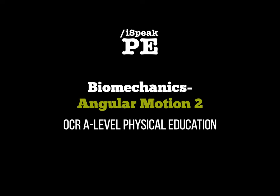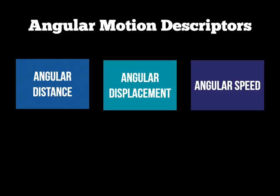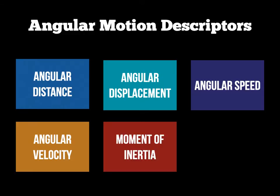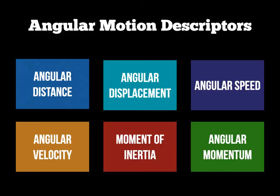Hello again, folks. This is another screencast on Biomechanics, and this time we are looking at the second aspect of angular motion, revolving around moment of inertia. If you remember from the last screencast, Angular Motion 1, we took a look at the different angular motion descriptors. The first four boxes on the screen are covered in that screencast. What we are going to look at here is moment of inertia, and in the following screencast we will look at angular momentum.